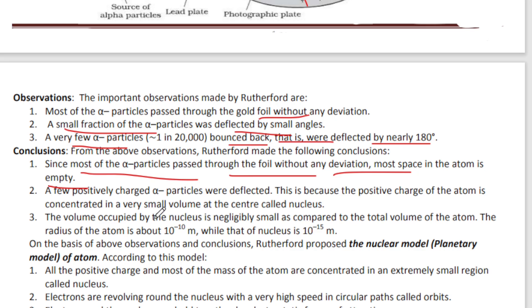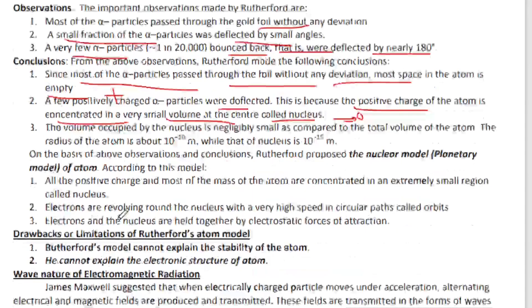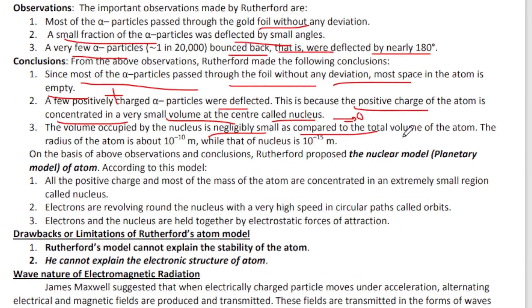A few positive alpha particles were deflected. The positive charge of the atom is concentrated in a very small volume at the center called the nucleus. The volume occupied by the nucleus is negligibly small as compared to the total volume of the atom.